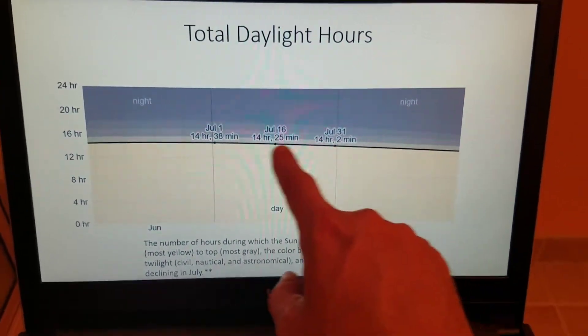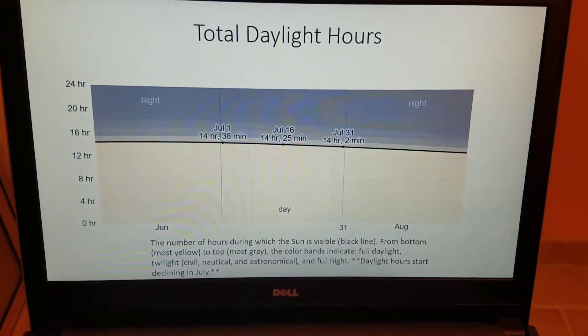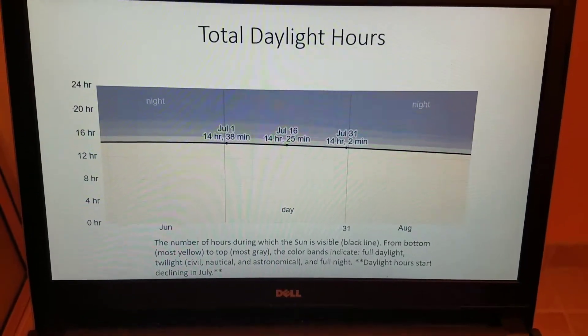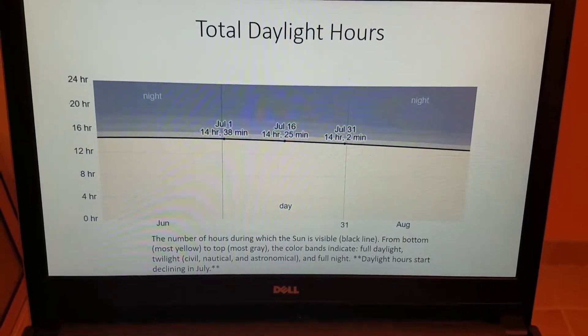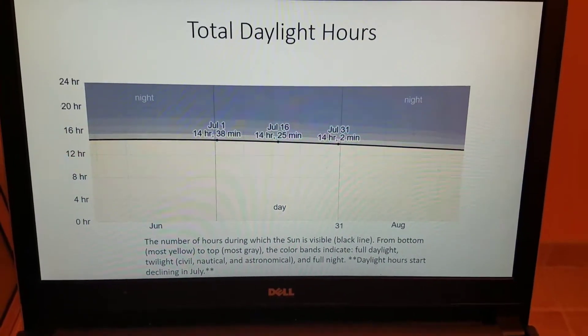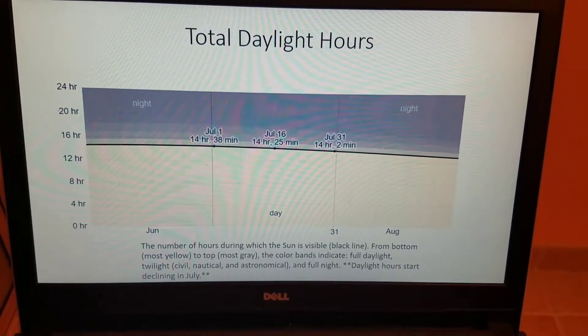The major decline will start happening in August and especially September towards the autumnal or fall equinox. So plenty of light out there for your outdoor plans in the month of July.